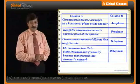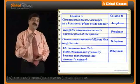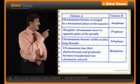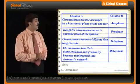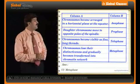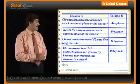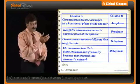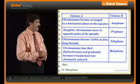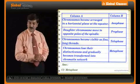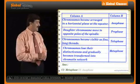So what should be the right answer for the first one? It is arranged at the equator. So the answer should be metaphase. Take the second one: daughter chromosomes move to opposite poles of the spindle. The answer is anaphase, not prophase.